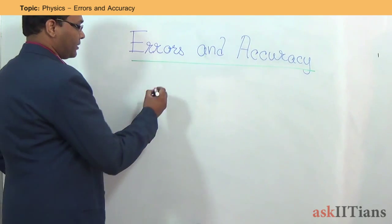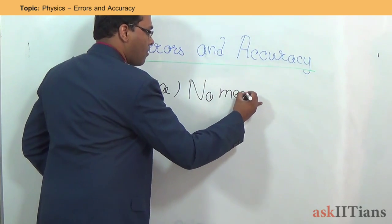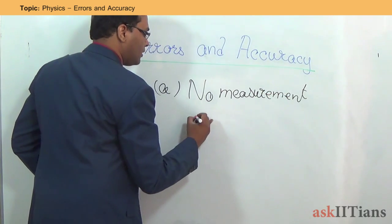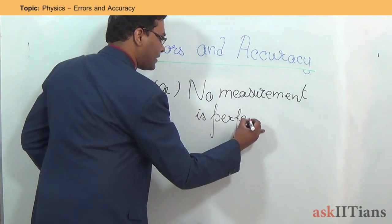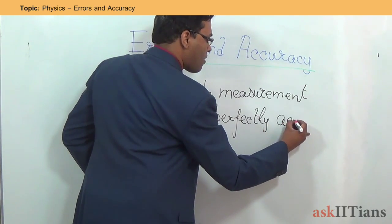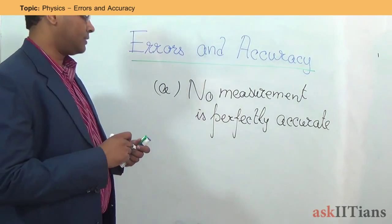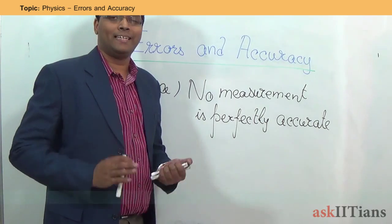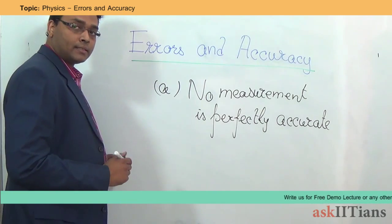The first thing to understand is that no measurement is perfectly accurate. You cannot have any measurement which is completely accurate. There is going to be some amount of error introduced.